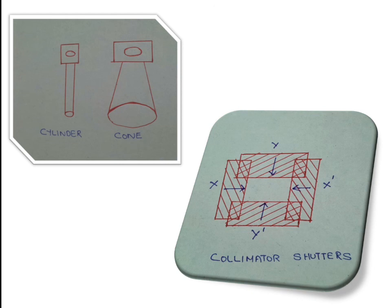The collimator shutters can be brought close together or set apart to determine the area of exposure. Inside the collimator there is a collimation light — switching it on shows how much area will be covered by radiation. If the area is too large, we reduce it by bringing the shutters closer: bringing Y and Y-dash closer, and X and X-dash closer, to adjust the exposure area as needed.